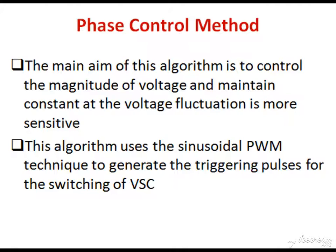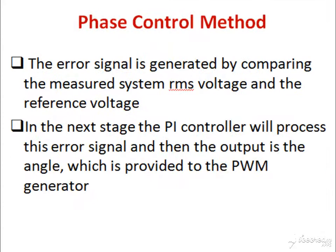This algorithm uses the sinusoidal PWM technique to generate the triggering pulses for switching of the VSC. The error signal is generated by comparing the measured system RMS voltage and the reference voltage. The PI controller will process this error signal and the output is the error angle, which is provided to the PWM generator.